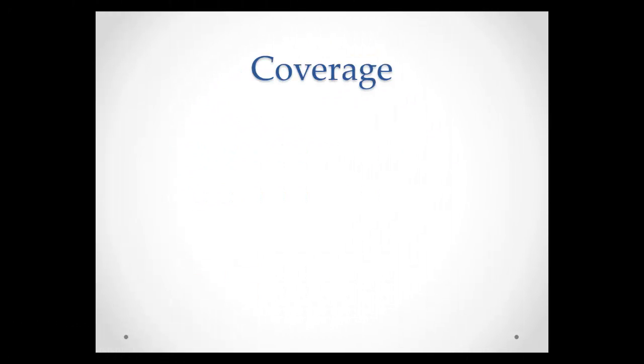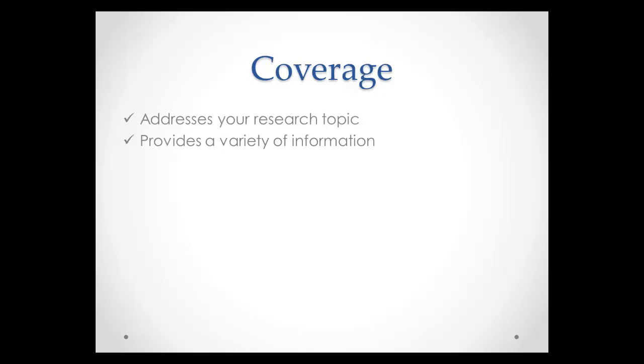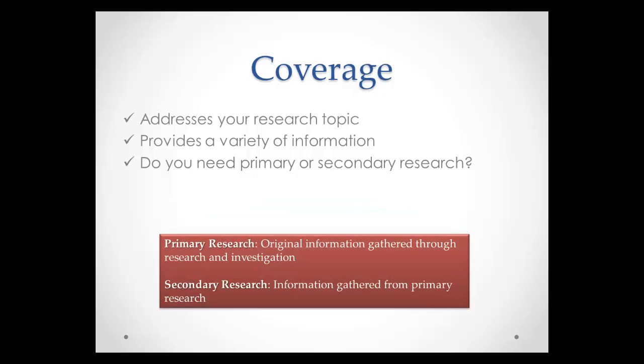What type of coverage does the book or article have? Make certain it addresses your research topic. Each book or article should provide a variety of information. Consider whether you need primary or secondary research. Primary research is original information gathered through research studies, interviews, and investigations. Secondary research is analyses or collections of information gathered from primary research.